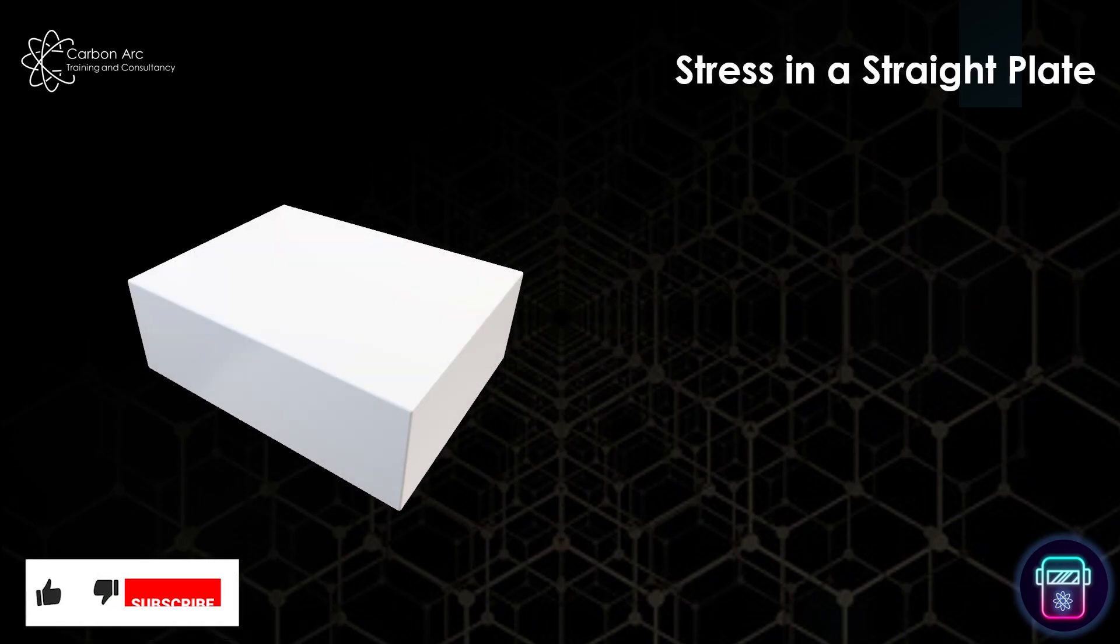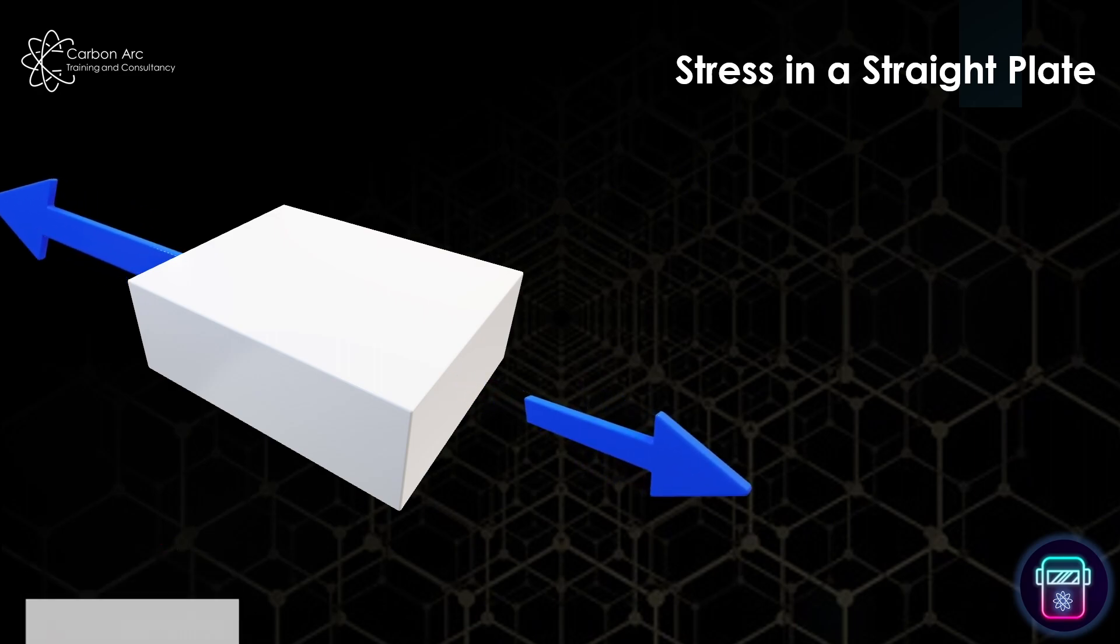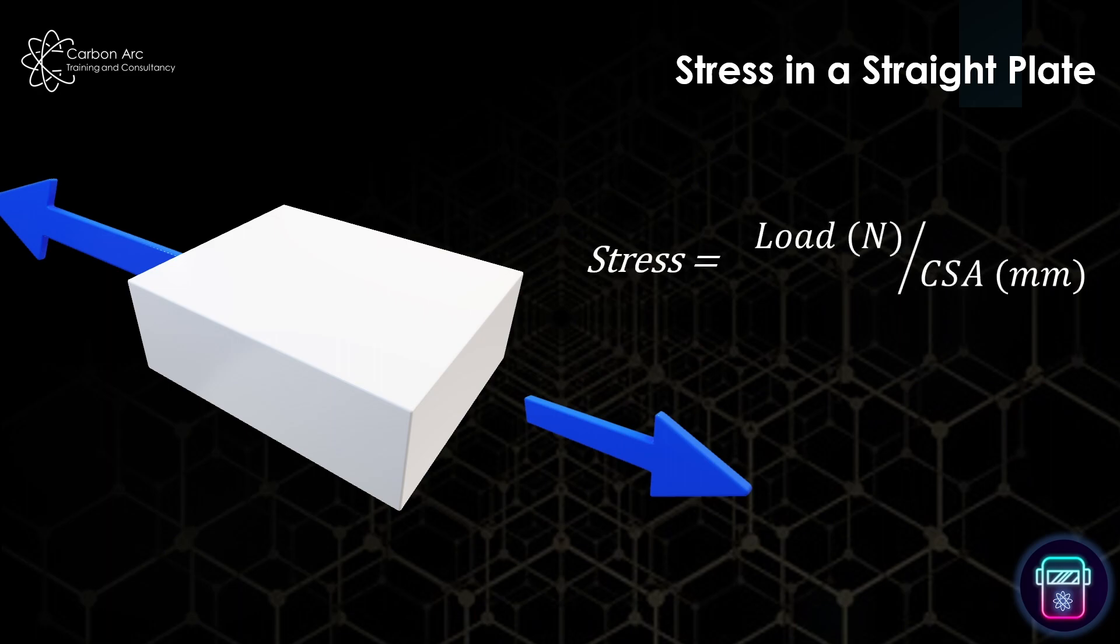So if I have a plate and I start applying a tension or stress, trying to pull that plate apart, around the center of the plate will form stress. That can be calculated using the equation stress equals the load applied divided by the cross-sectional area.